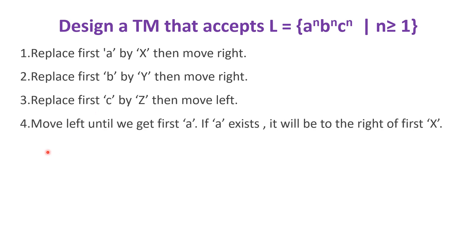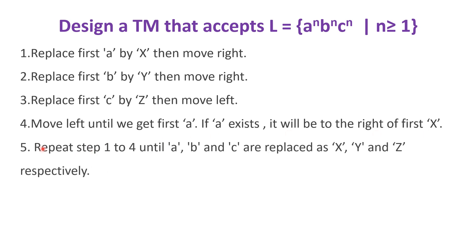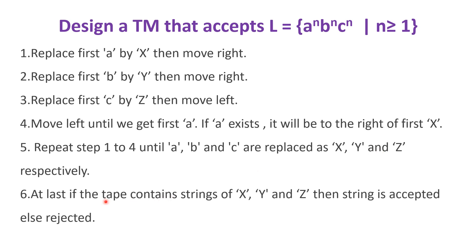Then we move back to search for the next set of ABC. We move left until we get the first A. If A exists, it will be to the right of the first X. Once we get A, we repeat steps 1 to 4 until all A's are replaced as X, B as Y, and C as Z. At last, if the tape contains only X's, Y's and Z's, then the string is accepted, else it is rejected.